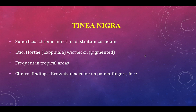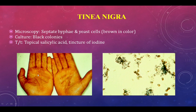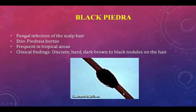Tinea nigra is a superficial chronic infection of the stratum corneum caused by Exophiala werneckii. It is commonly found in tropical areas and presents as a brownish macule — a flat, non-raised discoloration — on the palms, fingers, or face. On microscopy you find septated hyphae and yeast cells; on culture on SDA it grows as a black-colored colony. Treatment is topical salicylic acid.